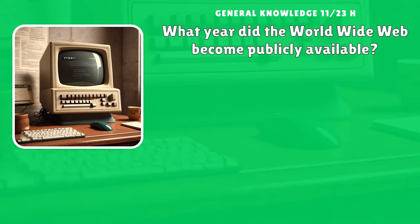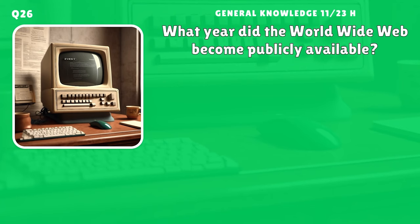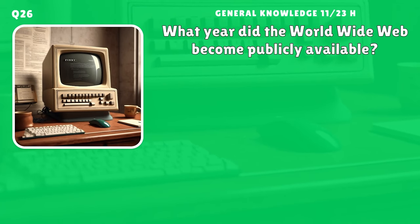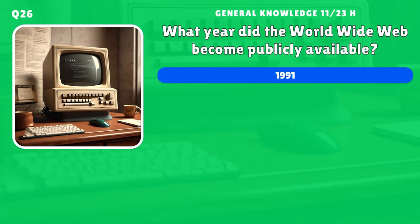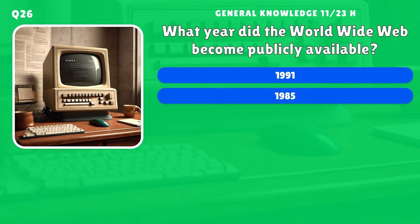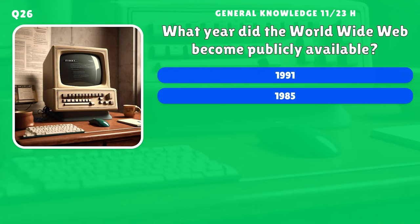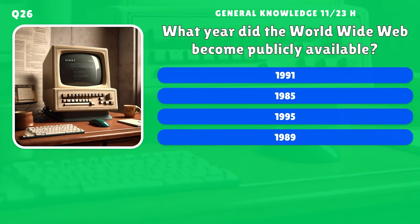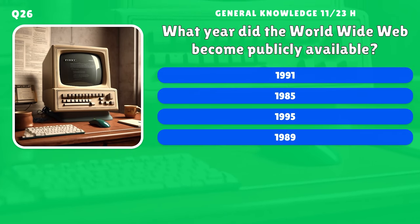What year did the World Wide Web become publicly available? A) 1991, B) 1985, C) 1995, D) 1989.